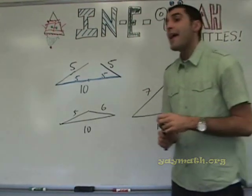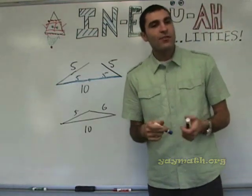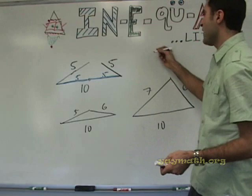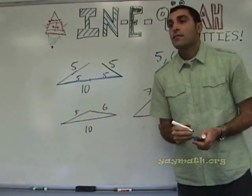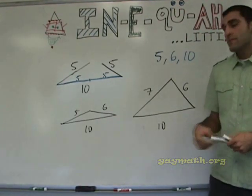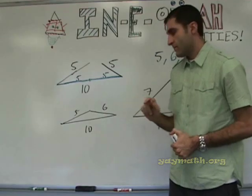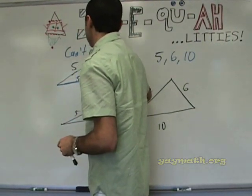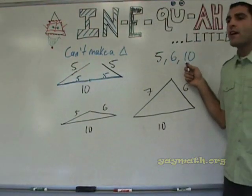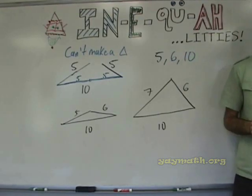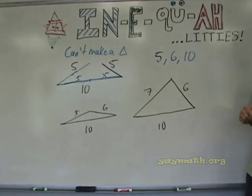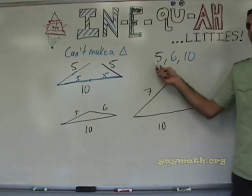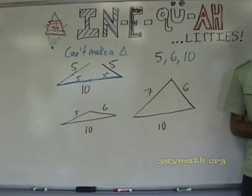Can you make a triangle with sides five, six, and ten? The answer is yes. Five plus six is greater than ten. Six plus ten is greater than five. And five plus ten is greater than six. You check all three combinations. So yes, you can make a triangle with five, six, and ten — it would look something like this.